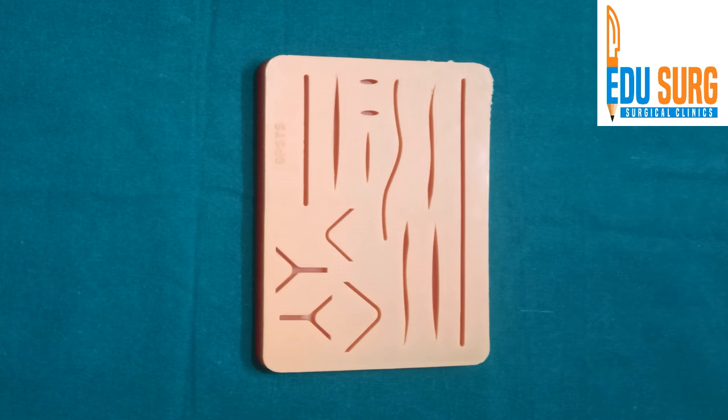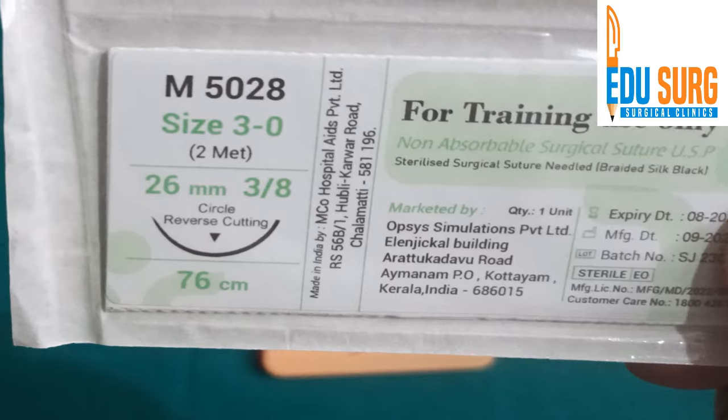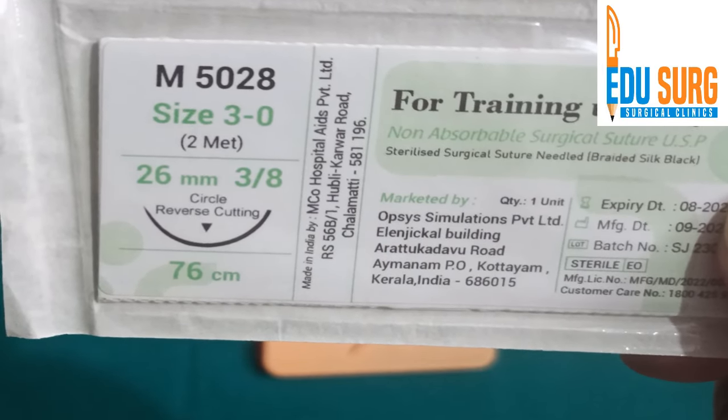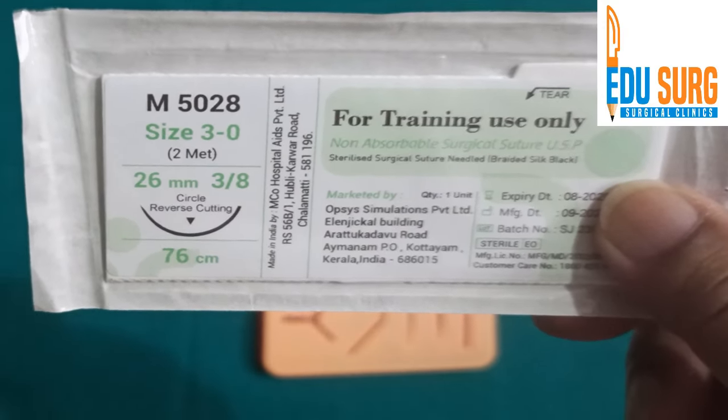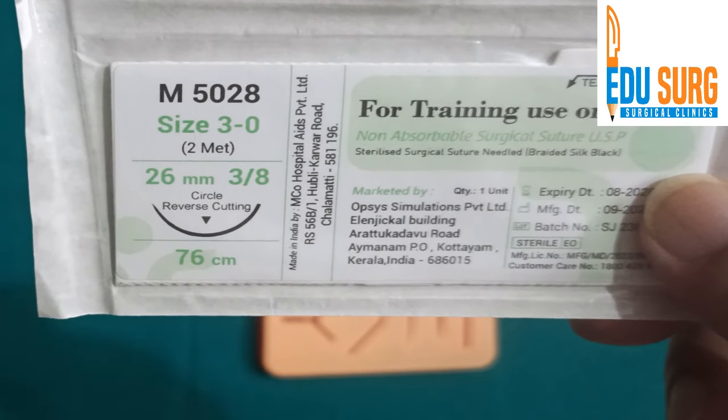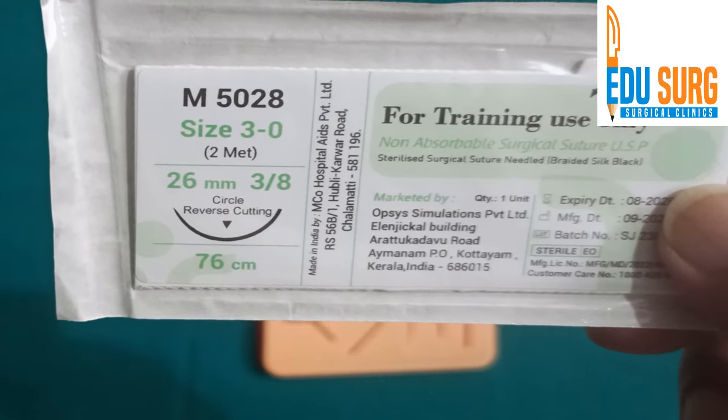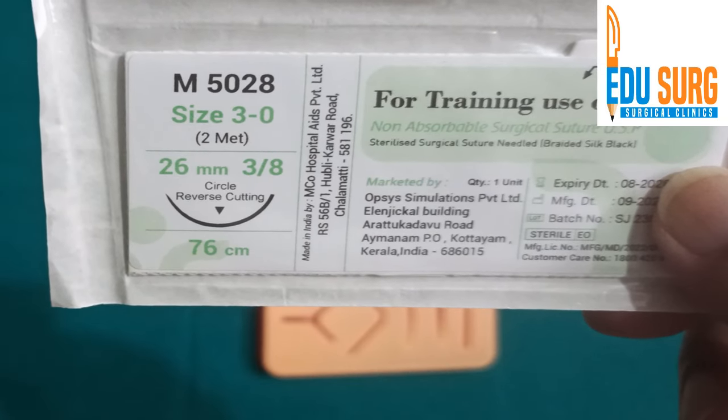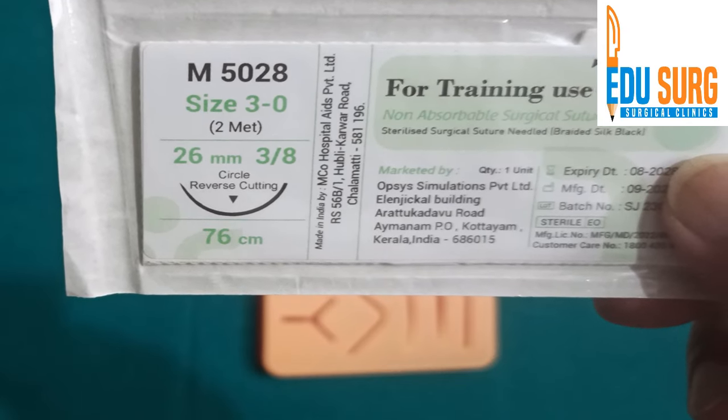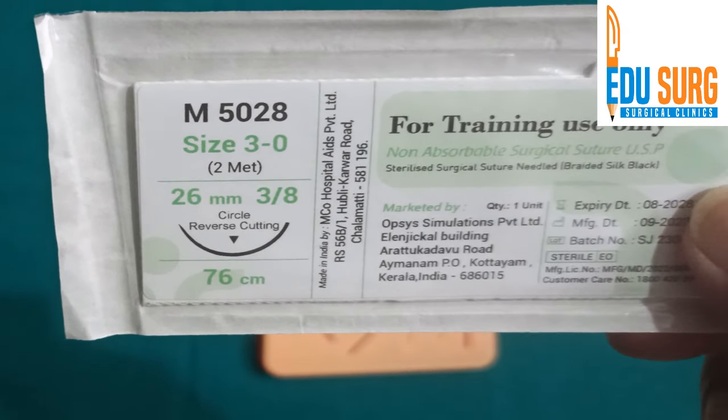Before we begin, let us see how to use the needle holder, how to remove the needle from the pack, and what are the different parts of a suture material that you see in your OR. So to begin with, we are going to use a 3-0 non-absorbable suture material. This is a braided silk black, it's a 3-0. The size is written as you can see. The needle is given by an inverted triangle, that means it is a reverse cutting needle, and the length of the suture is 76 centimeters. The needle length is 26 mm.